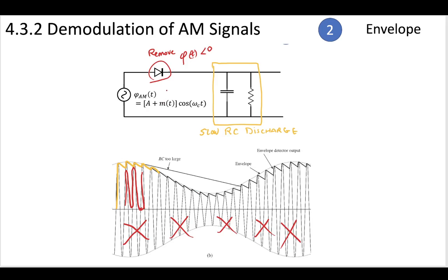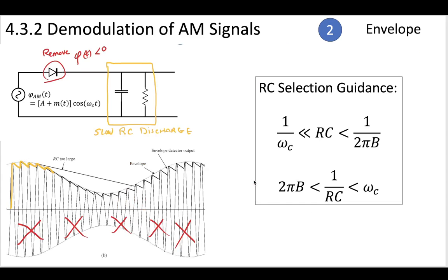And so again, this is going to be really cheap, just a diode, capacitor, and resistor. And you're going to get an envelope at the end, and that envelope is going to contain all of the same information as your message. So all you have to do is you just need to make sure that you select some smart values for your RC circuit.